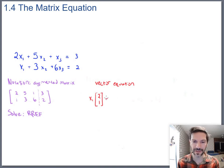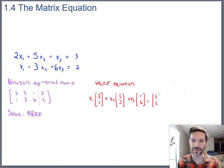And then we'd say x2 is multiplied by 5, 3, and x3 multiplied by 1, 6, and that equals yet another vector, which is 3, 2.